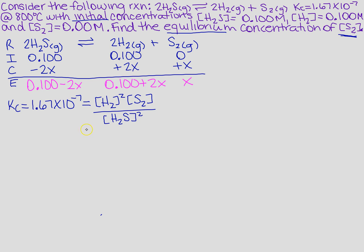And then what am I going to do? Well, I'm going to plug in what I get for my equilibrium. So I'm going to put in 0.100 plus 2x squared times x. And then I'm going to put that over 0.100 minus 2x squared.